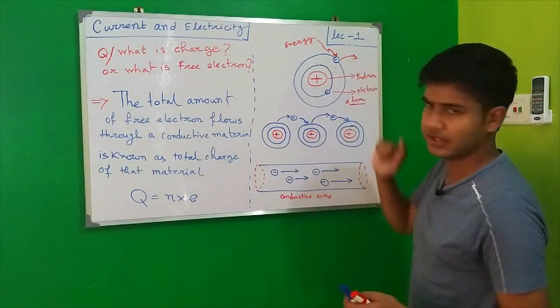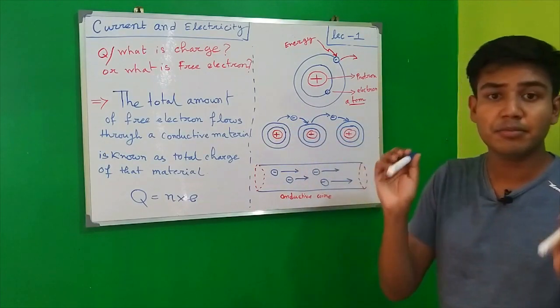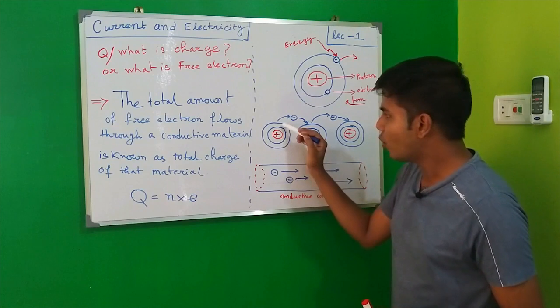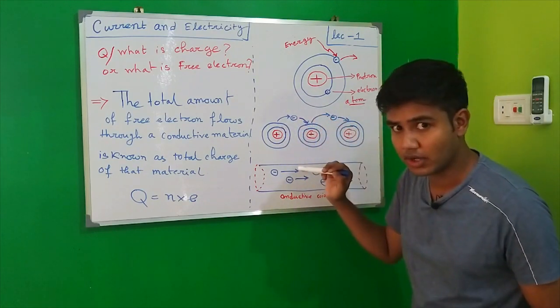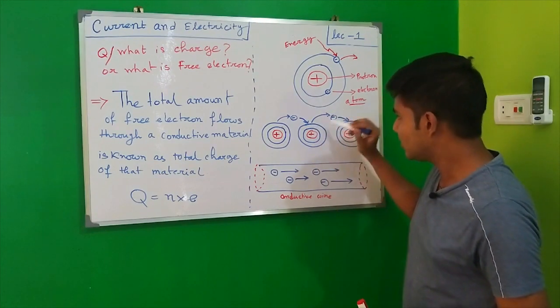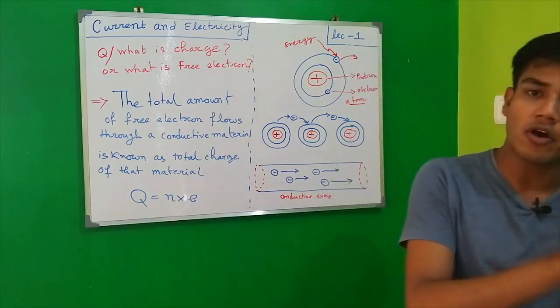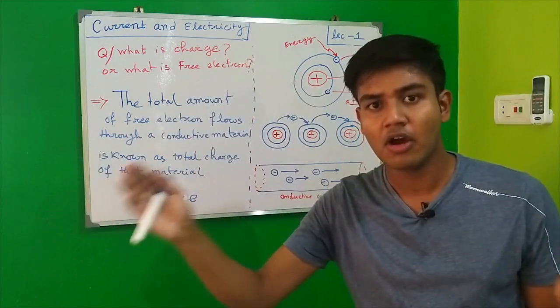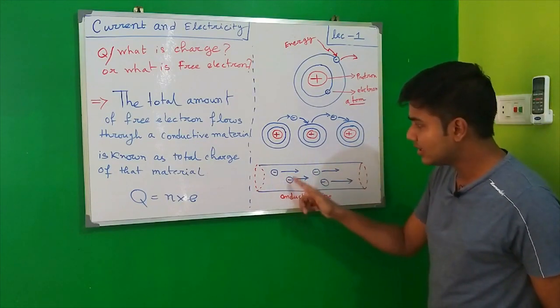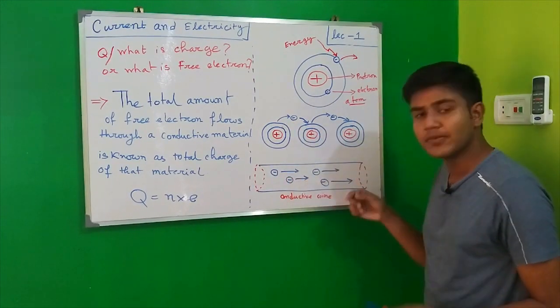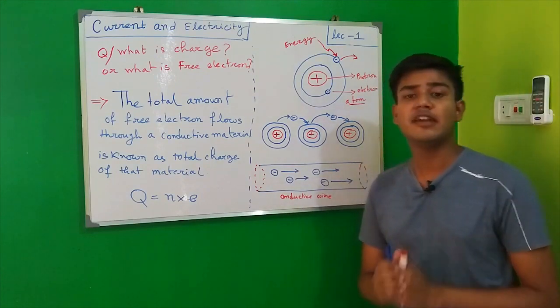There are many electrons in our material. As one electron comes out from one atom, it moves to another, then to another. This is how electrons flow from one end to another of a material. In a conductive material, these electrons move like this and are known as free electrons.